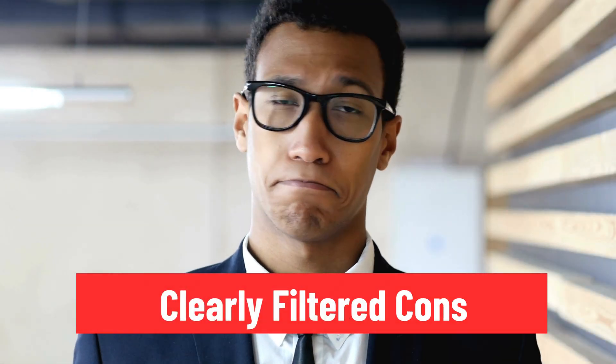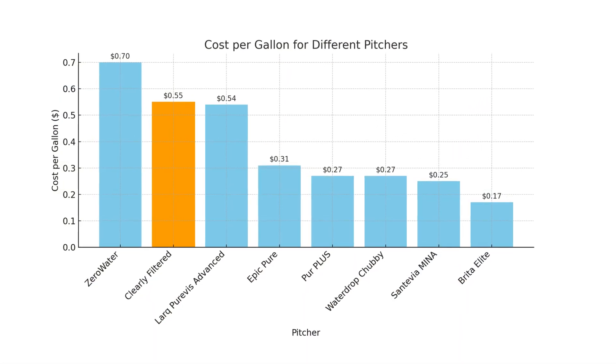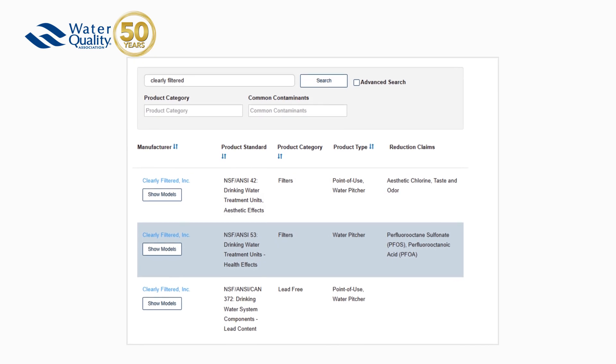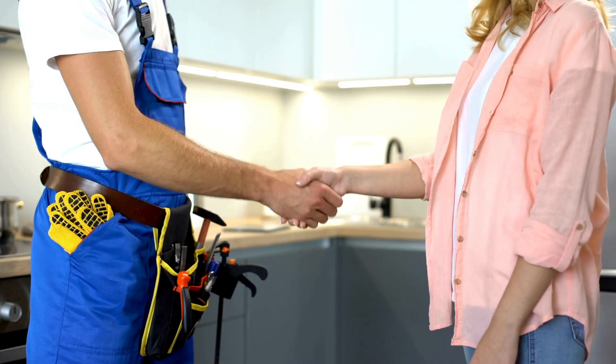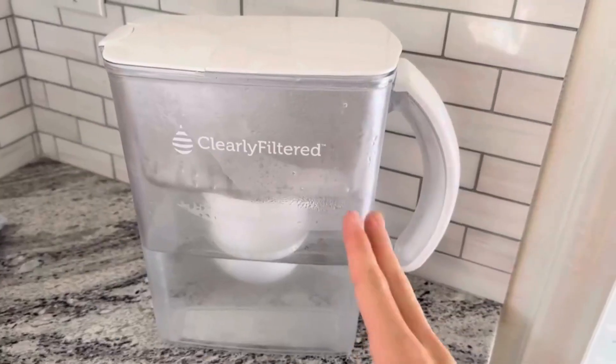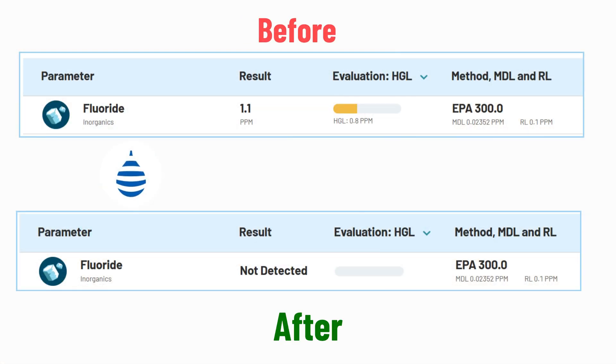Coming to its cons, it is costlier to maintain than other pitchers, and is only certified to reduce 3 out of 360 contaminants it claims to reduce. But overall, the Clearly Filtered pitcher is best for people who want to remove fluoride without a heavy upfront cost.